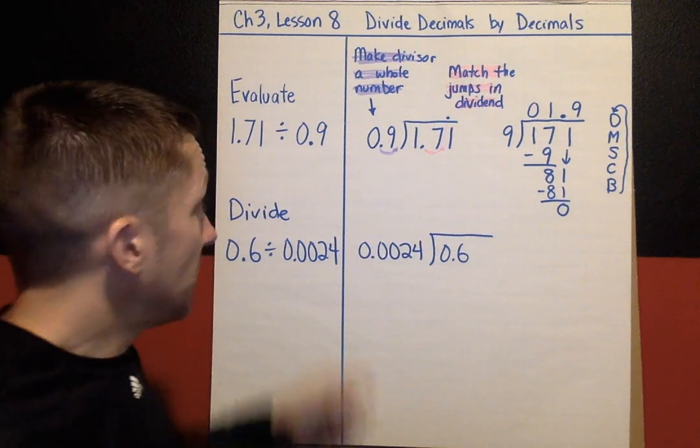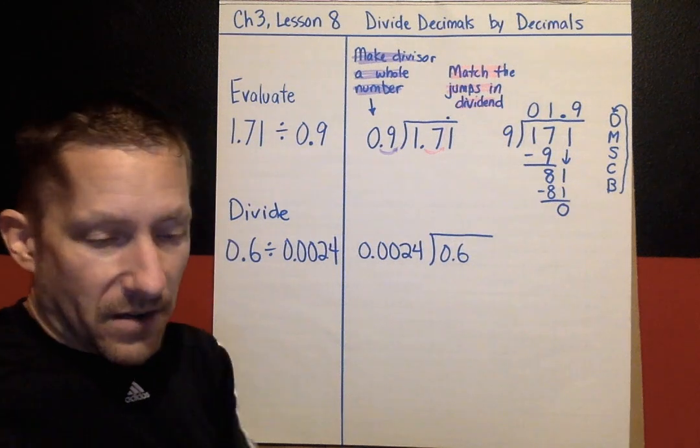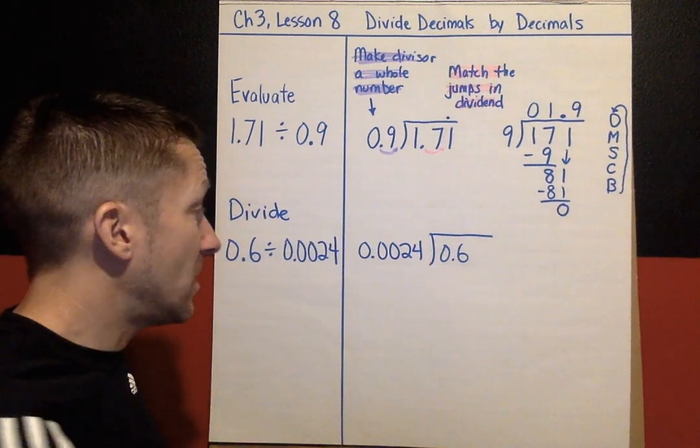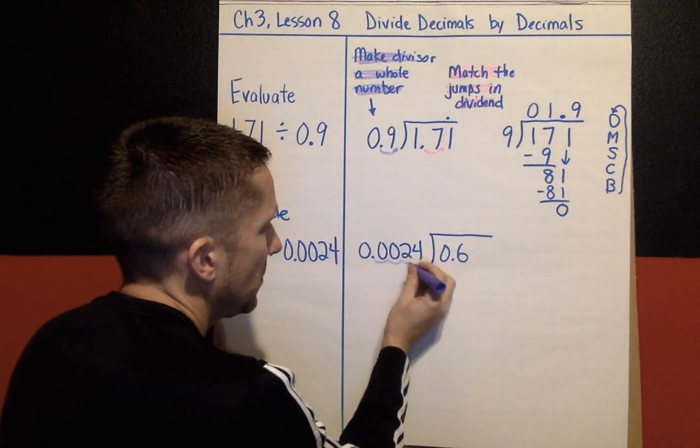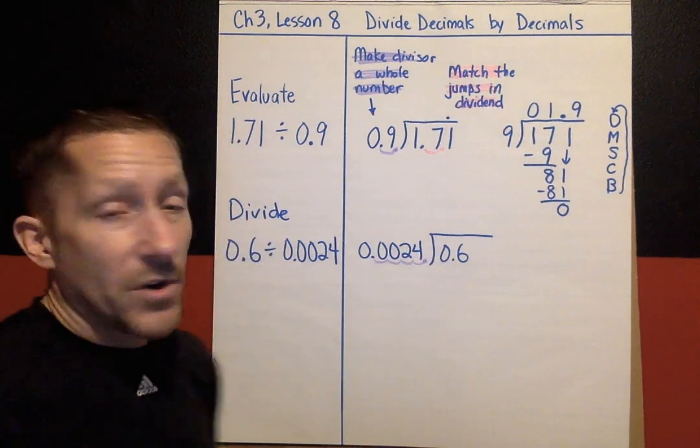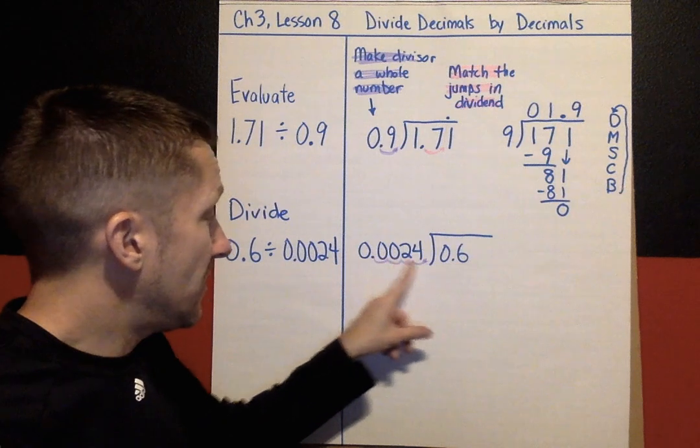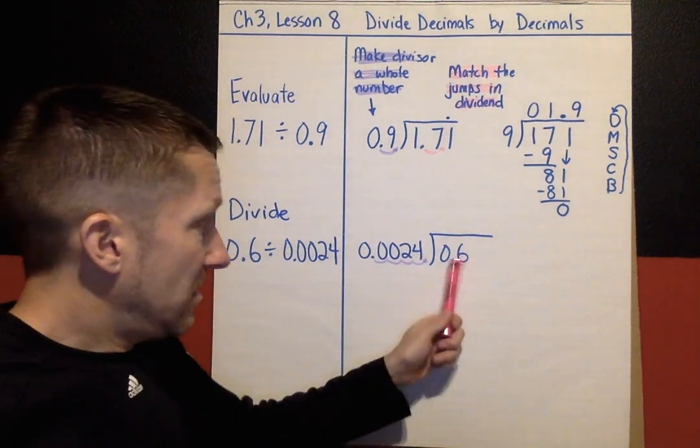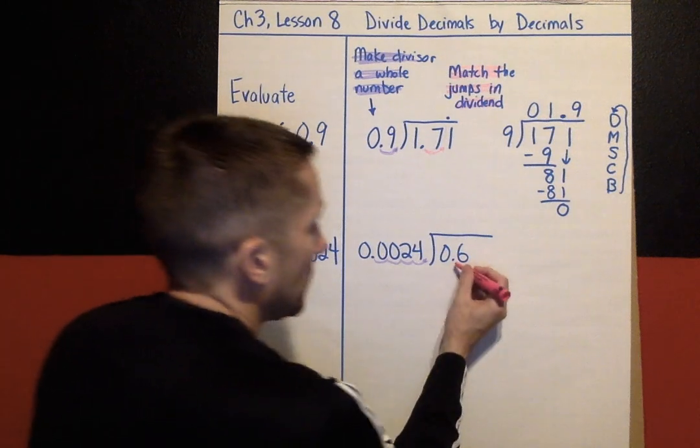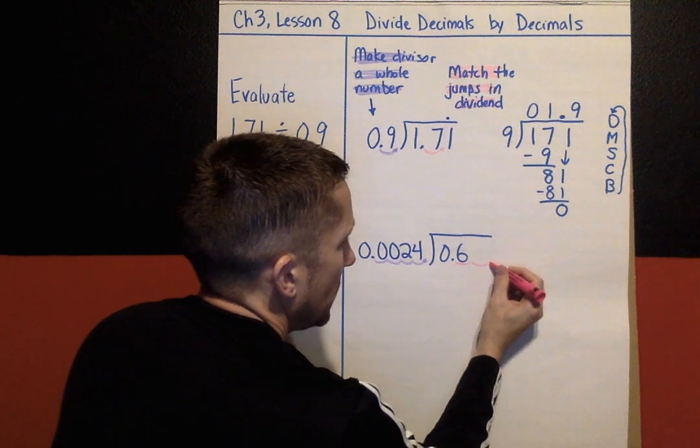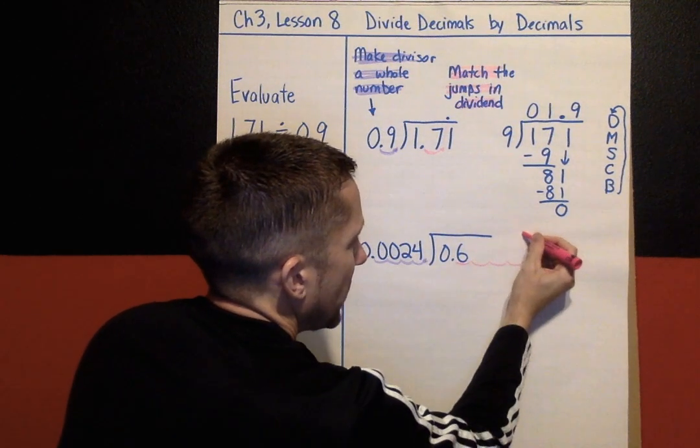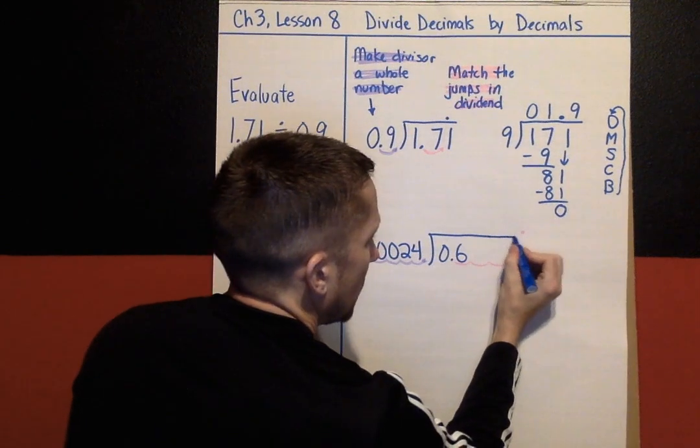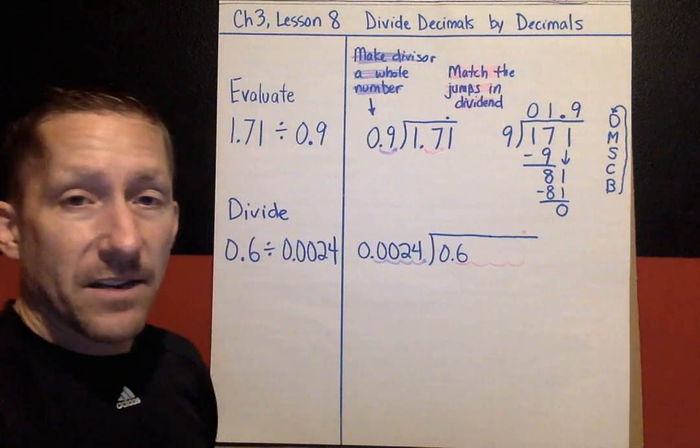So going back to my steps, the first thing I want to do is make the divisor a whole number. So right now, it's 0.0024. I want to move the decimal point all the way over here to make it a whole number 24. So how many jumps does that take? 1, 2, 3, 4. It took 4 jumps to change the divisor into a whole number. I want the decimal point moved all the way to the right. Well, I have to match that on the dividend, 4 jumps on the dividend. So 1, there's 1, 2, 3, 4 jumps. So notice that I have a bunch of empty or blank jumps, right? I have these empty jumps because I needed 4 jumps on the inside.